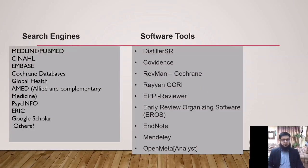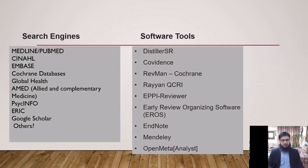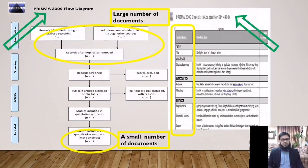Useful general tools include Covidence, Distiller SR, RevMan Cochrane, EPPI-Reviewer, and EROS. For citation managers, there are EndNote and Mendeley. Tools for meta-analysis include Distiller SR, Forest Plot Generator from Evidence Partners, RevMan by Cochrane, and Open Meta-Analyst. Useful tools also highly recommended include the PRISMA flow diagram and PRISMA checklist — PRISMA stands for Preferred Reporting Items for Systematic Reviews and Meta-Analysis.